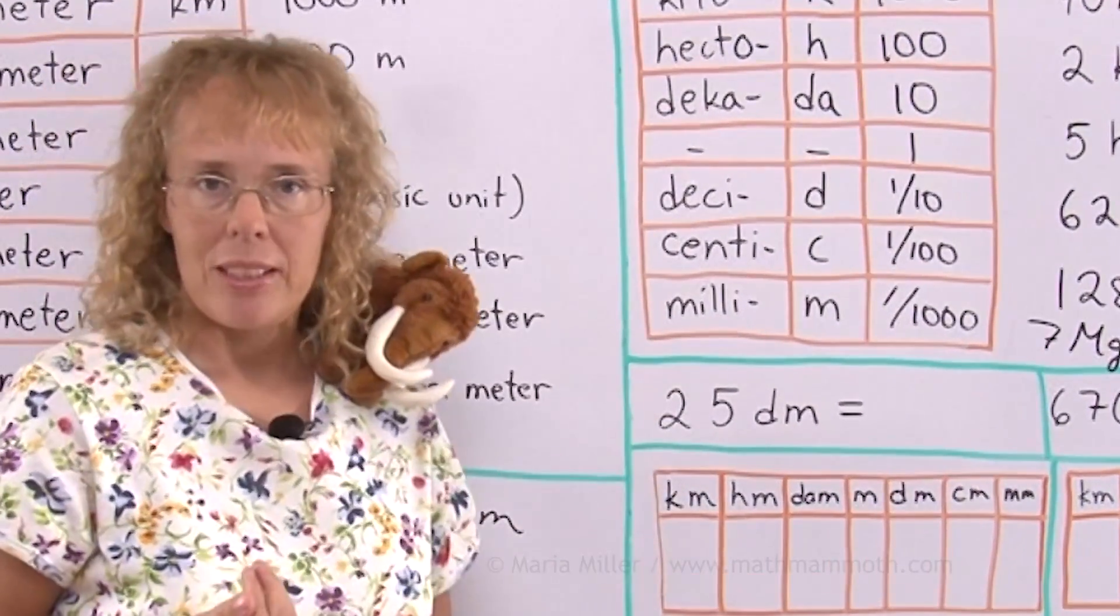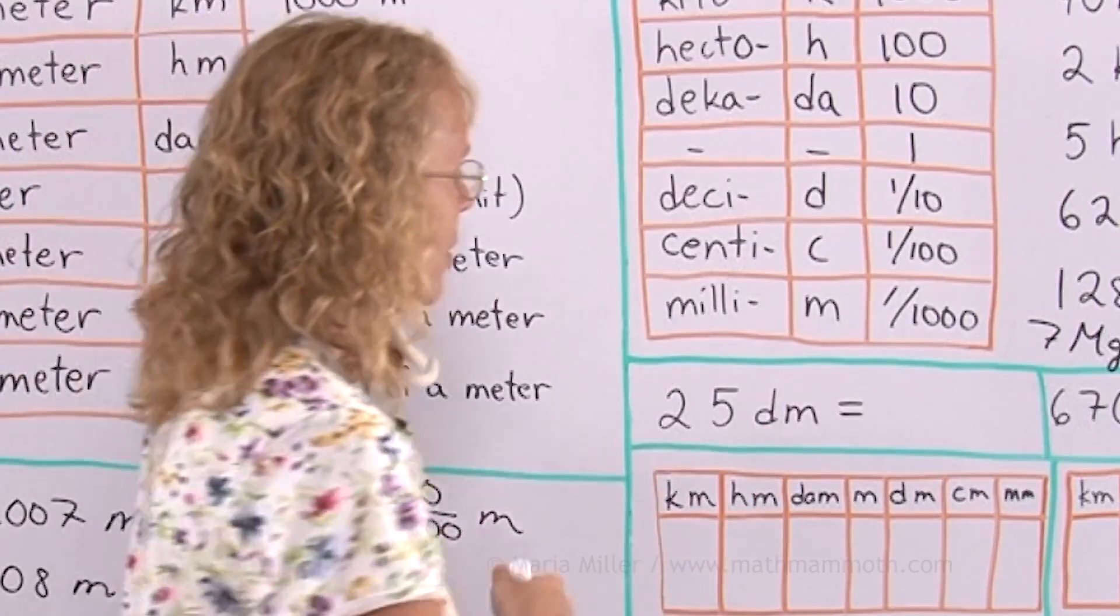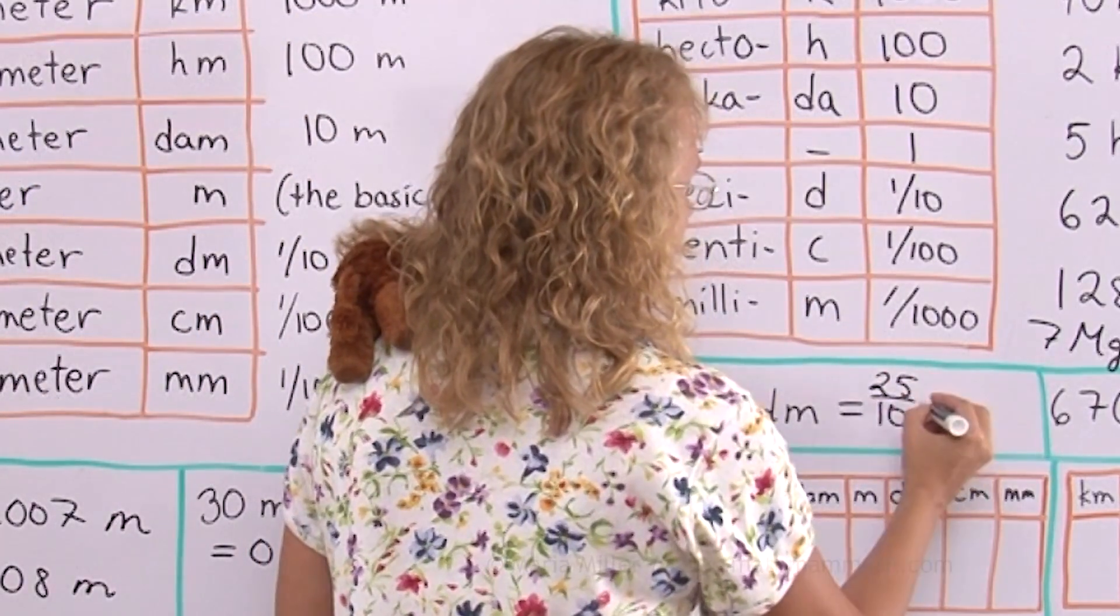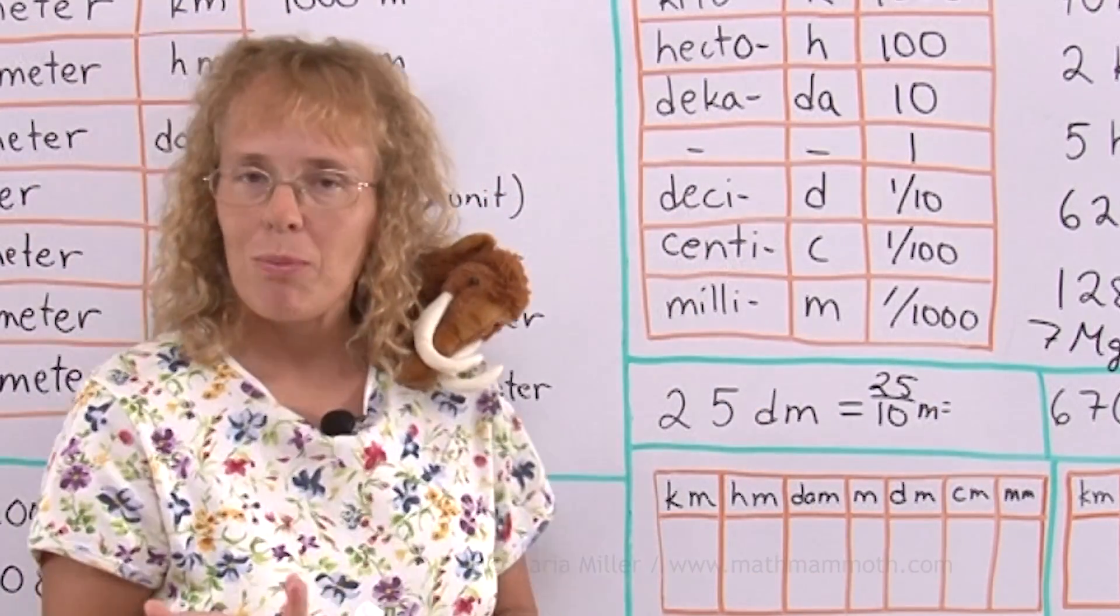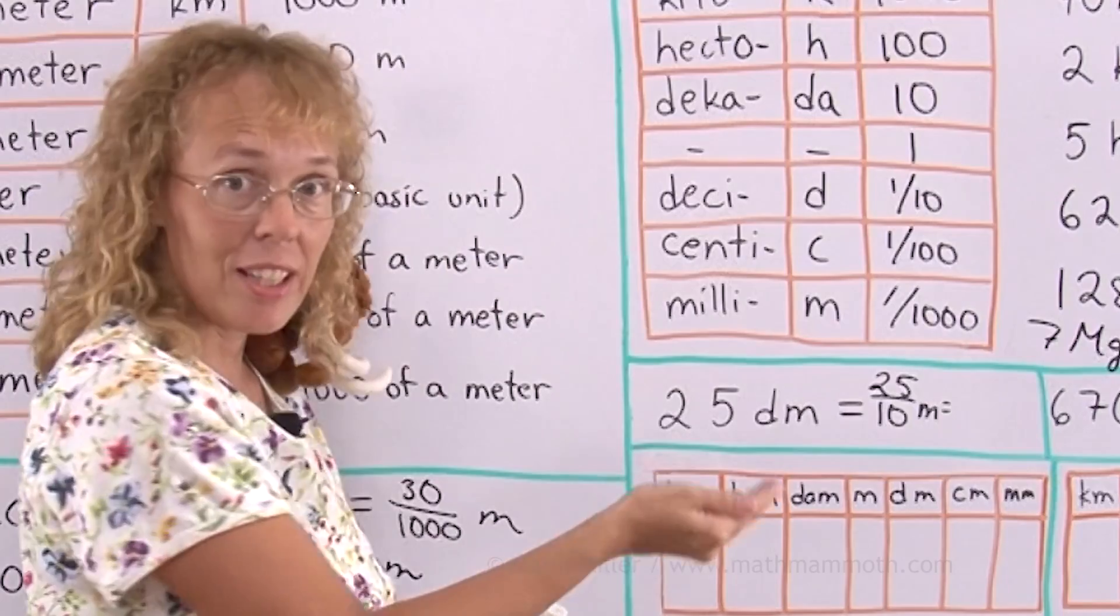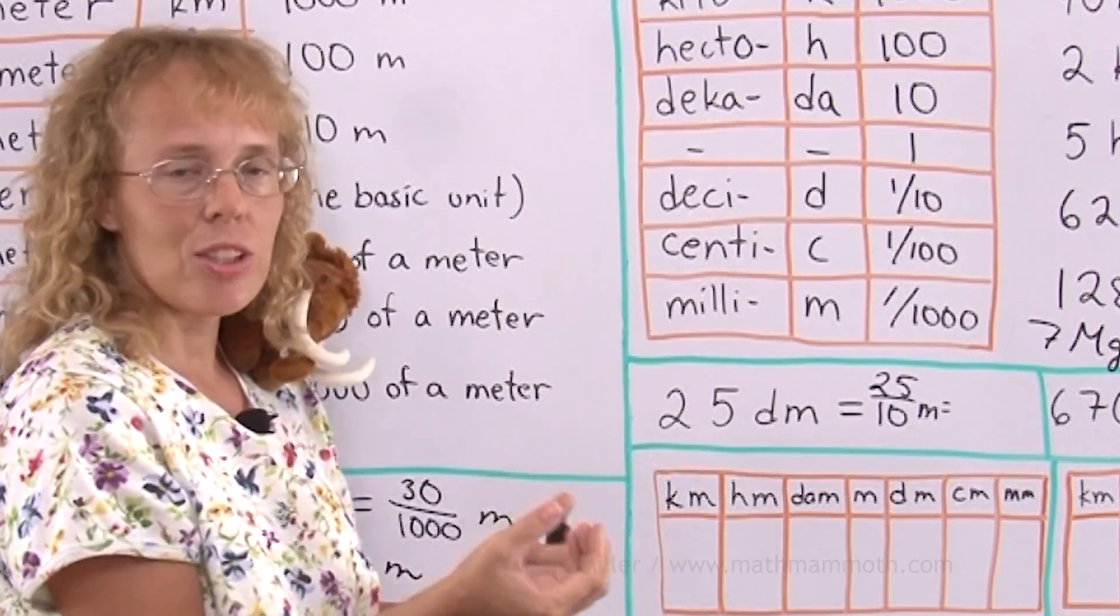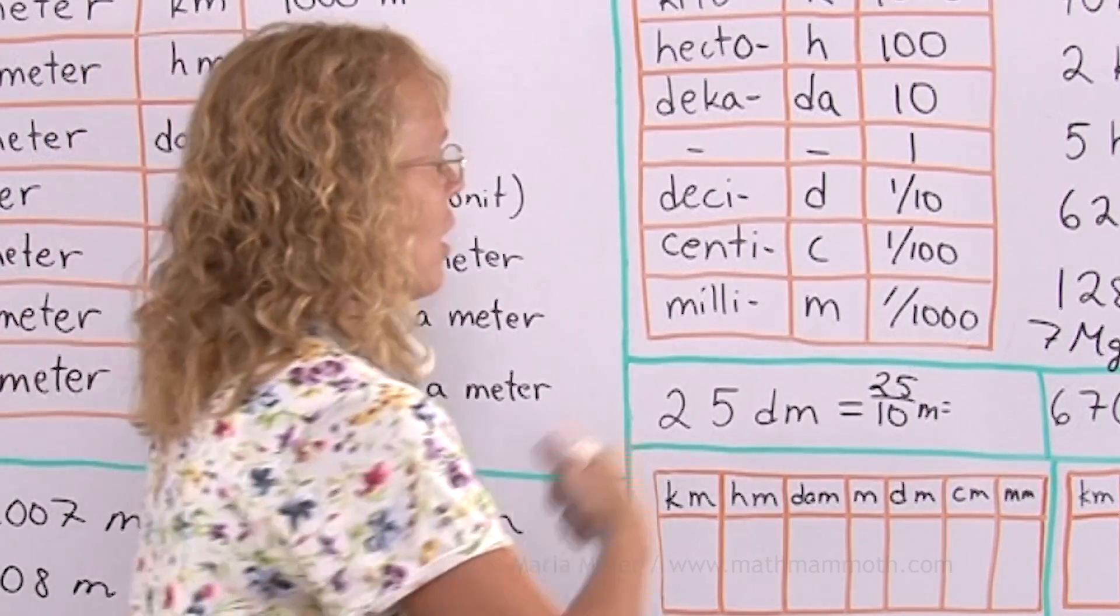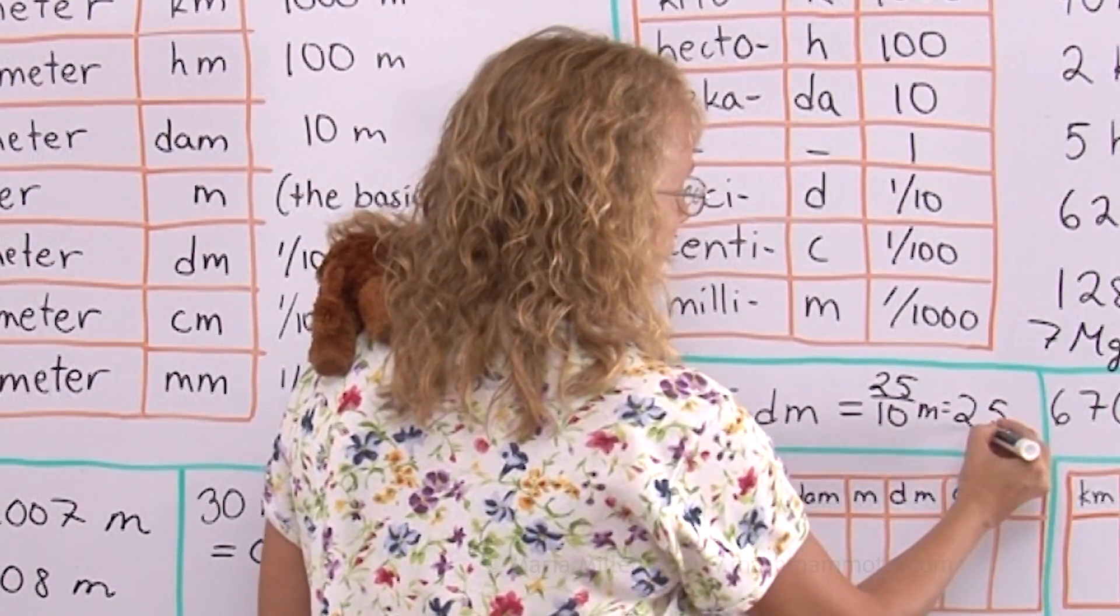Two more. Twenty-five decimeters. Deci meaning tenth part. So I have twenty-five tenths of a meter. And you can either use fraction math to see that this is going to be two and five tenths, or you can think that if it had been twenty, I would get exactly two meters. And then the 0.5 will follow after the two: 2.5 meters.